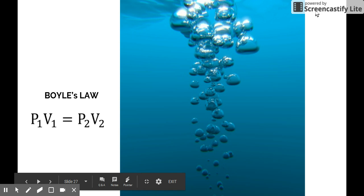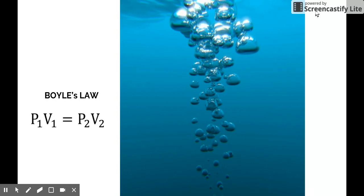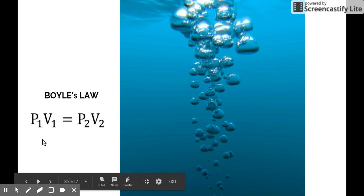Boyle's Law. From the previous video about the concepts of Boyle's Law, we know that Boyle's Law investigates the relationship of pressure and volume, and we found out that pressure and volume have an inverse relationship or indirect relationship at constant temperature and amount of gas. And so the mathematical expression of Boyle's Law is P1V1 is equal to P2V2.